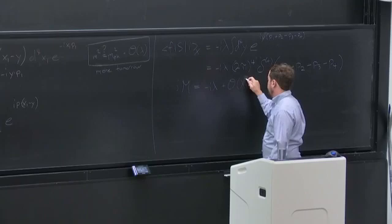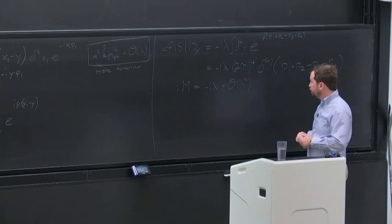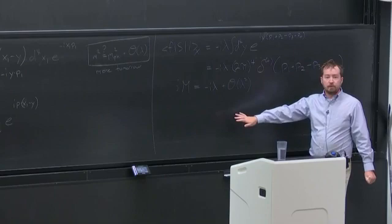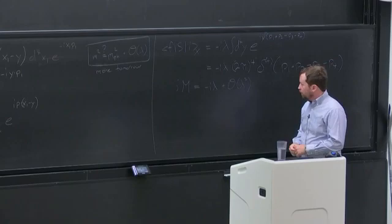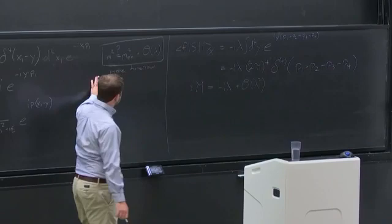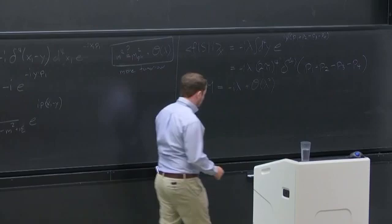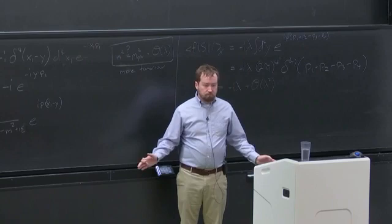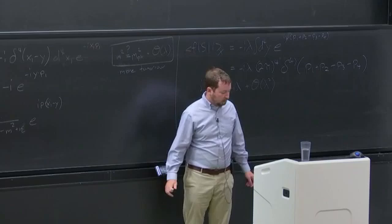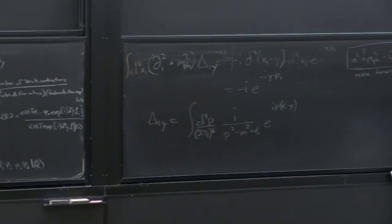We were working to leading order, so there are higher order corrections. We're almost ready to write down the Feynman rules for the matrix element, just generalizing our experience here. There are two things we need to consider. One is how to justify this — I'm going to make a claim. I'm not going to fully justify it today; I'll present a rough argument and fill in details tomorrow.